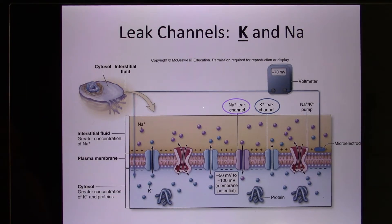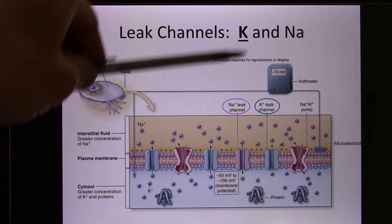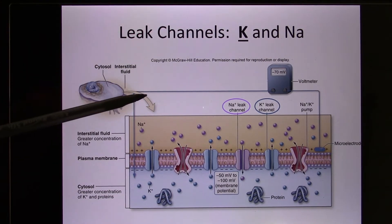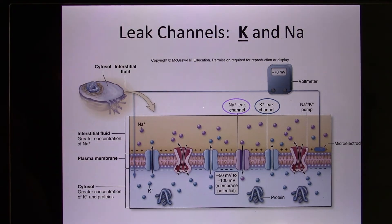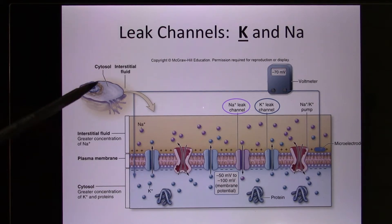So because of these three membrane proteins — number one, the sodium-potassium pump; number two, the potassium leak channel; number three, the sodium leak channel — we get what we call the resting membrane potential. The voltage inside the cell is very stable, at about minus 70 millivolt.